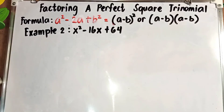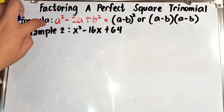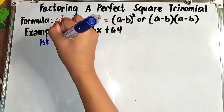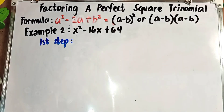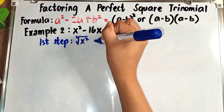For the second example, factor x² - 16x + 64. The middle sign is negative, so we will use the second formula: a² - 2ab + b² = (a - b)² or (a - b)(a - b). Step 1: Find the square root of the first term — the square root of x² is x.